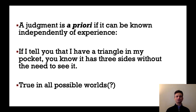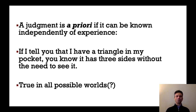A judgment or statement is a priori if it can be known independently of experience. If I tell you that I have a triangle in my pocket, you know that it has three sides without the need to see it — because you know that 'triangle' means something that has three sides. It's something that is true in all possible worlds.